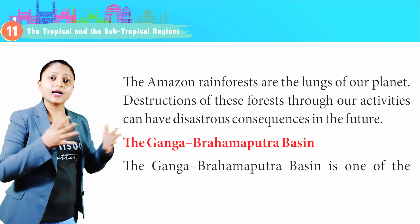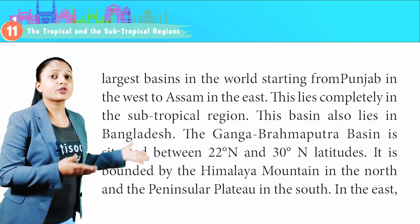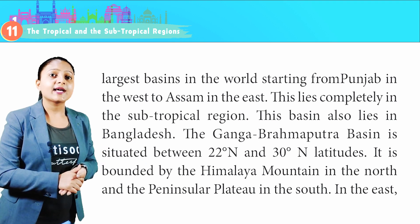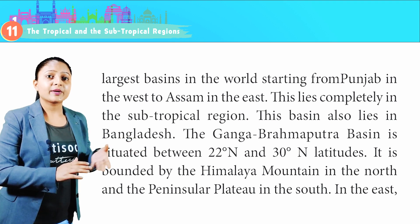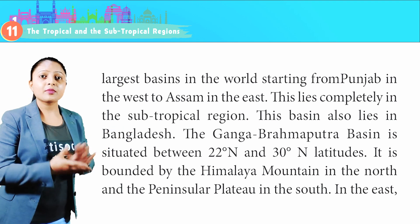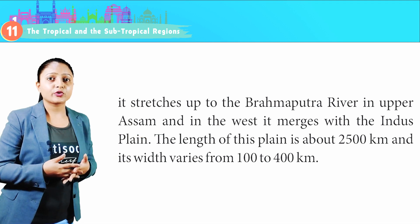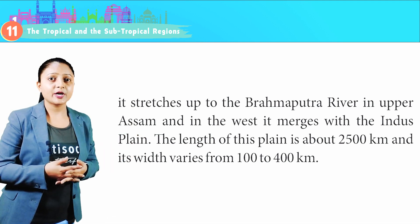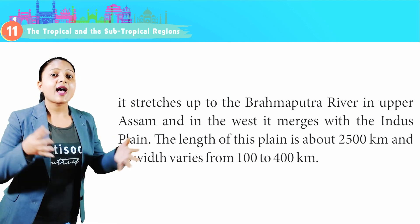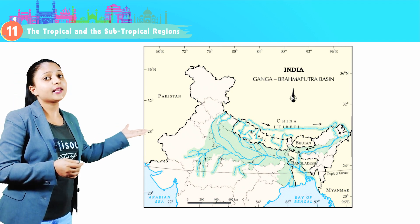The Ganga-Brahmaputra Basin is one of the largest basins in the world, starting from Punjab in the west to Assam in the east, lying completely in the subtropical region and also in Bangladesh. It is situated between 22 degrees north and 30 degrees north latitudes, bounded by the Himalayan mountains in the north and the peninsular plateau in the south. In the east it stretches up to the Brahmaputra River in upper Assam, and in the west it merges with the Indus Plain. The length of this plain is about 2,500 km and its width varies from 100 to 400 km.